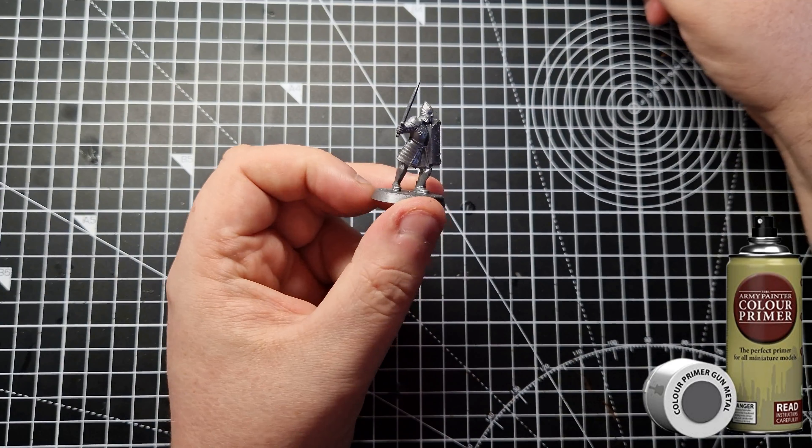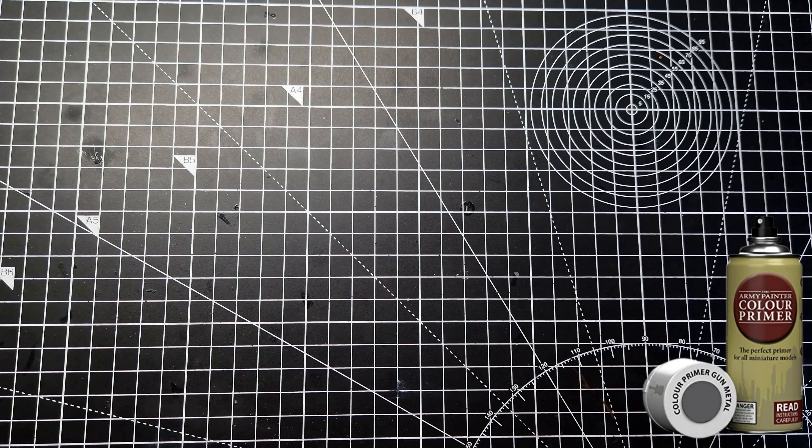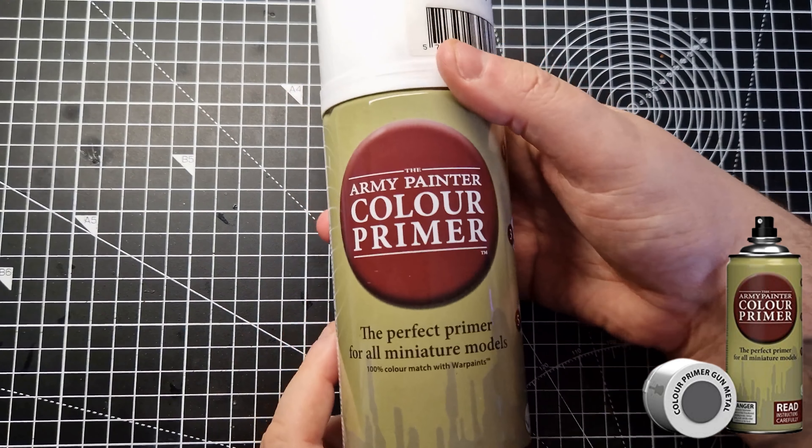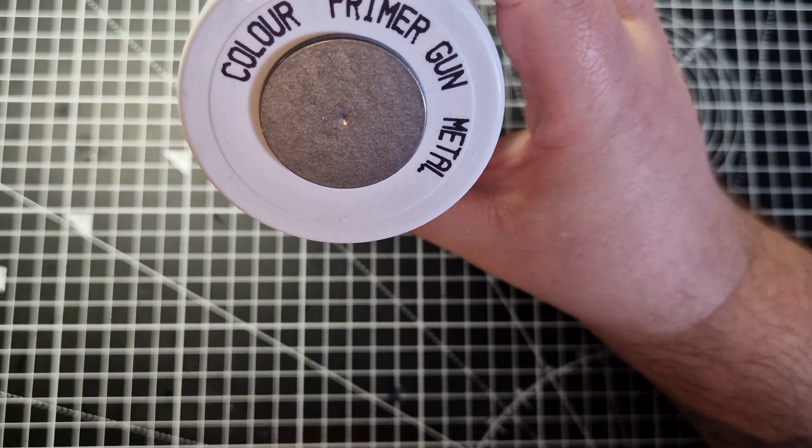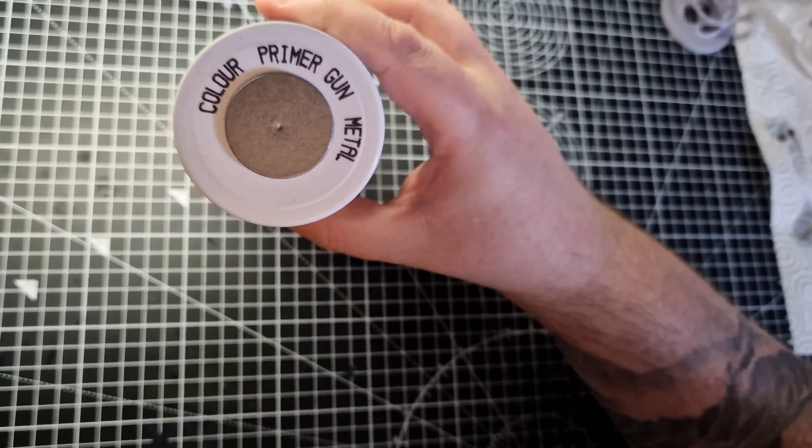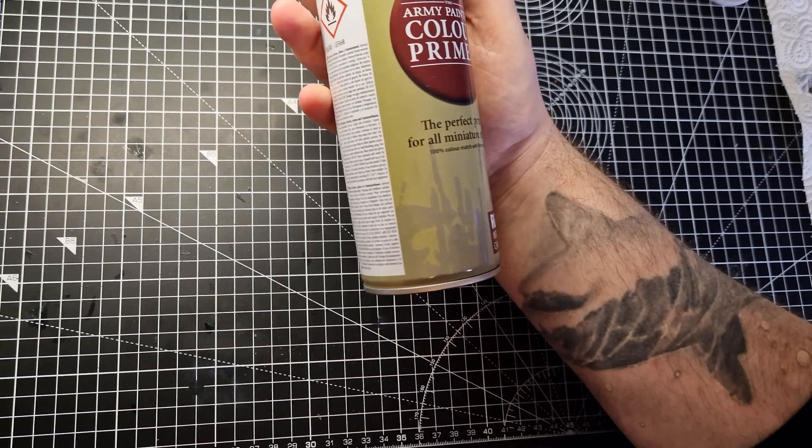To get these models started, we're going to prime them. Now, these models are about 90% armour, so I've chosen to use Gun Metal Spray Primer from the Army Painter. Honestly, you could probably just spray this, give them all a wash and call them done. This primer is fantastic for these models.